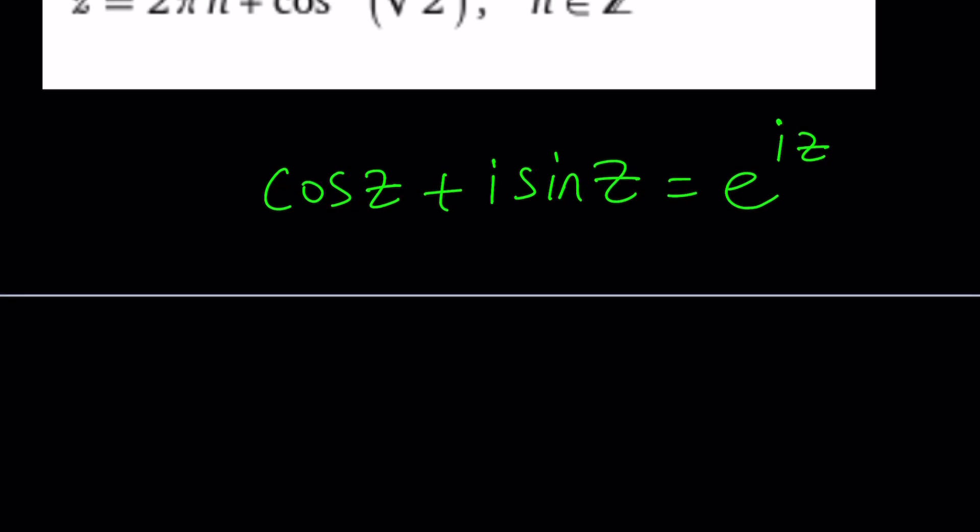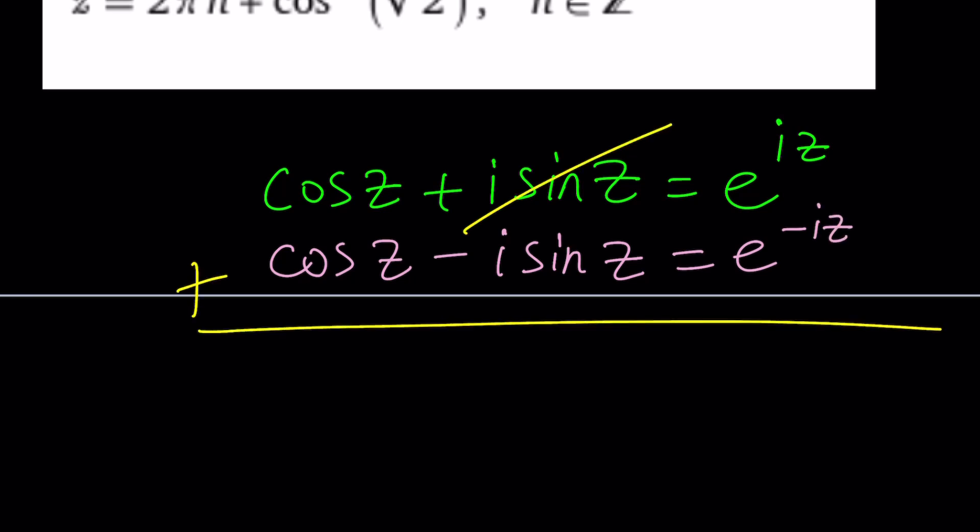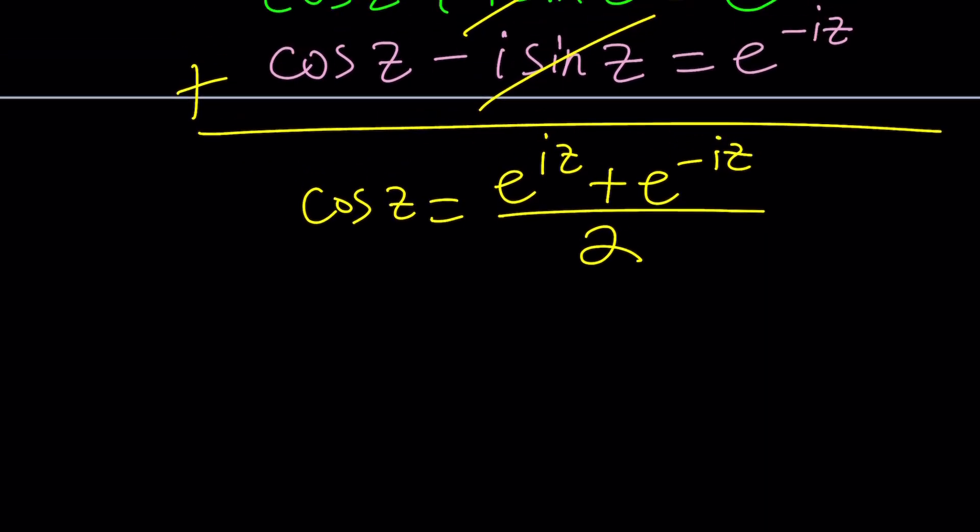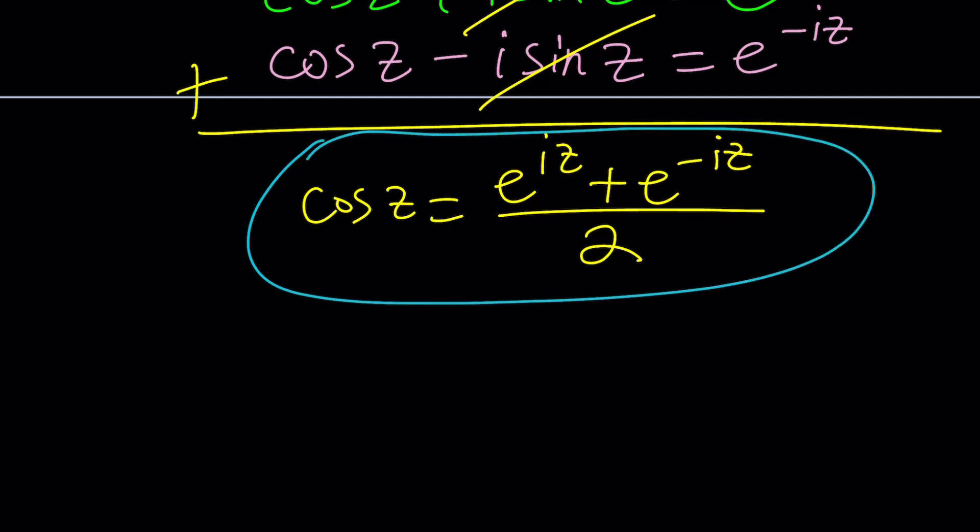Now we can, of course, replace Z with negative Z, but cosine is even, so it's not going to care. But sine cares about negatives. So we're going to get the following. And by adding these two equations, you can get rid of the i sine Z and end up with 2 cosine Z. And after division by 2, you get the following identity, which I think is super duper awesome or beautiful, gorgeous, whatever you want to call it. This is great. So now we're going to use this identity to solve this problem.